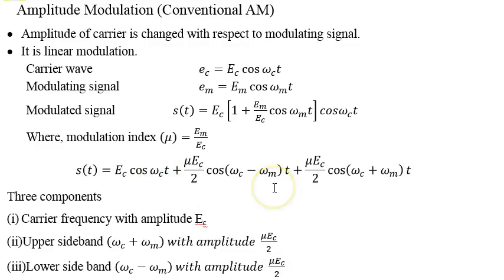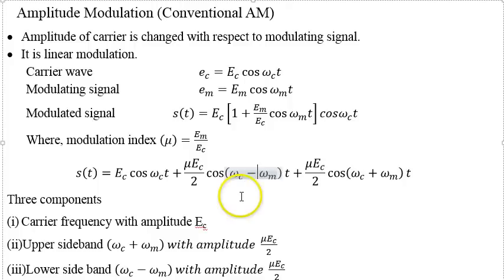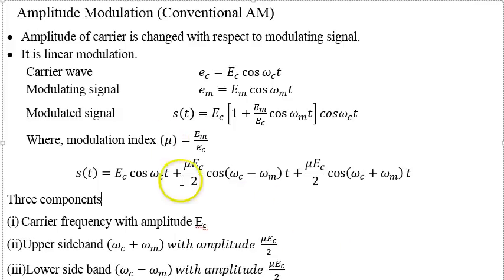Expanding the modulated signal reveals a component at (ωc − ωm) and another at (ωc + ωm). Two additional frequencies are added: one is the sum of the modulating and carrier frequencies, and the other is the difference. These are called sidebands — one is the upper sideband (USB) and one is the lower sideband (LSB). The amplitude of each sideband is μ·Ec/2, where Ec is the amplitude of the carrier wave.